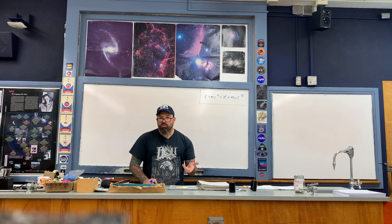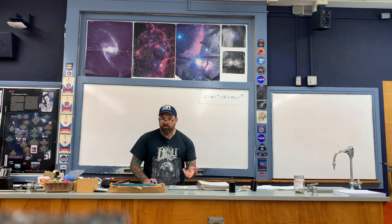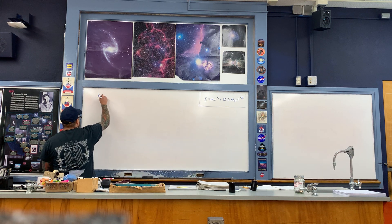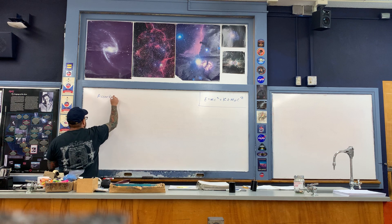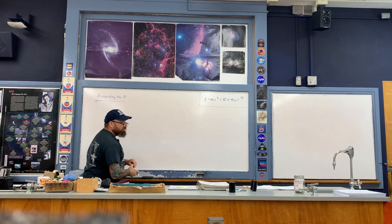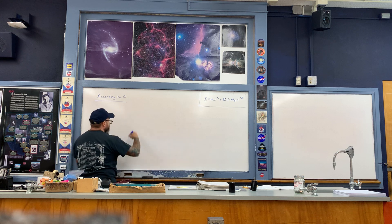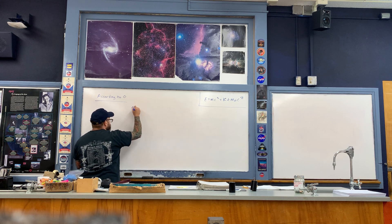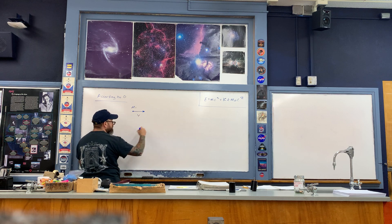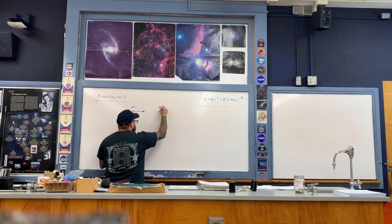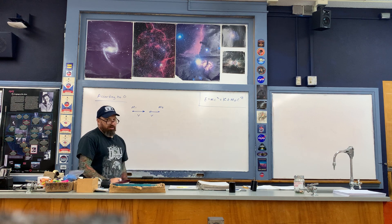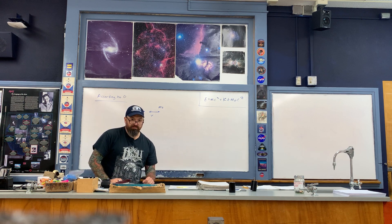Let me set up the situation according to the stationary reference frame. Recall what the situation looked like according to the stationary observer: we have relativistic mass m1 with speed v in one direction, and relativistic mass m2 with speed v in the opposite direction.